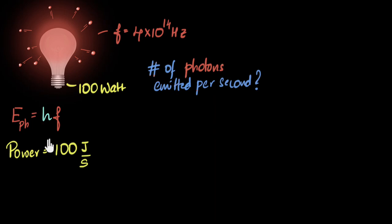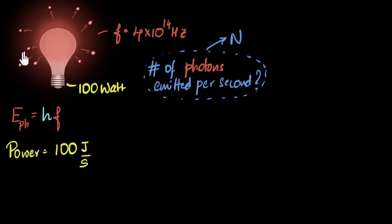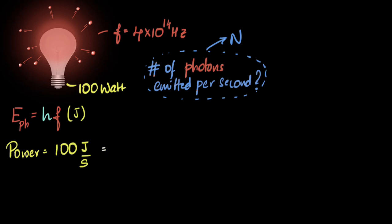To relate these two: this is sort of like total energy, and this is energy of one photon, so I can just relate them. Let's say n is the number of photons emitted per second. If there are n photons coming out per second and each photon has this many joules of energy, then the total energy coming out per second must be n times E. So I know that total energy coming out per second equals n times E, and that has to equal 100 joules per second. So I can equate this and calculate what n is going to be.